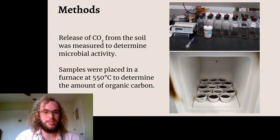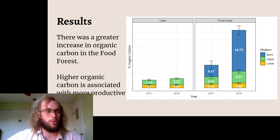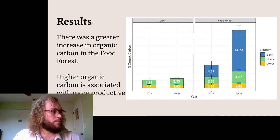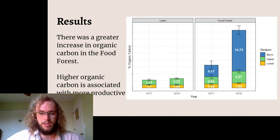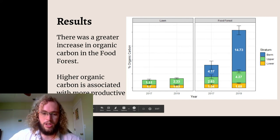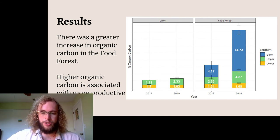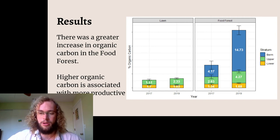This led me to the results of my study. I found that there was a much greater increase in organic carbon in the food forest area than there was in the lawn. Importantly, the amount of carbon that the food forest gathered in the past two and a half years since measurements were taken increased every single strata — you can see yellow, green, and blue all increased in the overall amount of organic carbon that they held. But in the lawn, one of the layers — the yellow lower layer — actually decreased in organic carbon. Overall, this shows that the soils of the food forest are quite rich, and higher organic carbon in soil is associated with more productive agricultural areas.